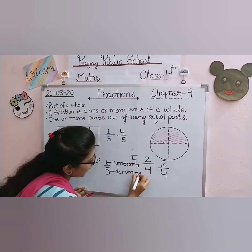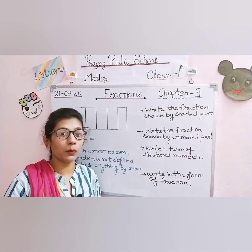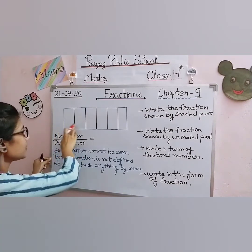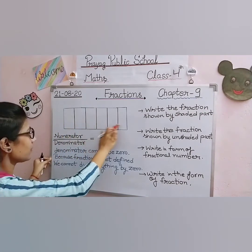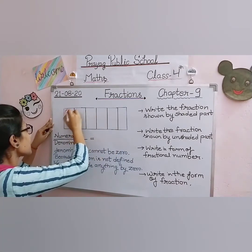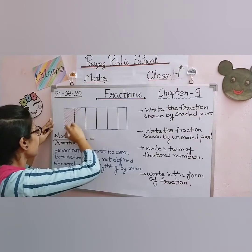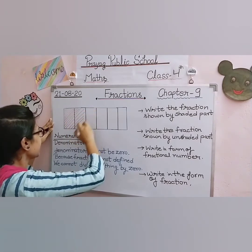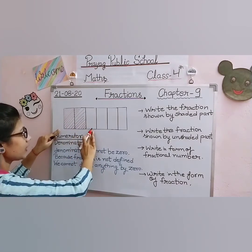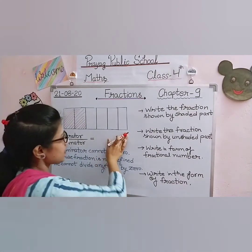Numerator upon denominator is a fractional number. Let's take one more example. Here is a rectangle divided into six equal parts — one, two, three, four, five, six. If I shade two parts of this rectangle, how do we write it as a fraction? If two parts are shaded, then one, two, three, four parts are unshaded.